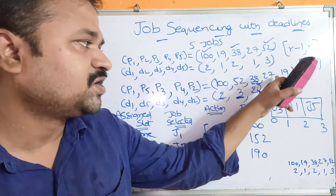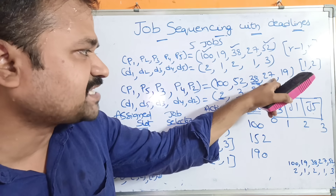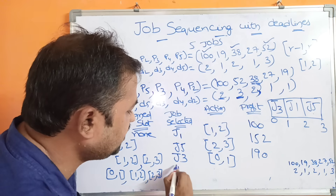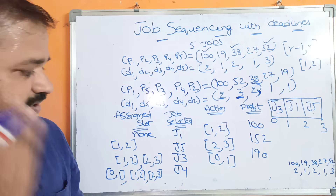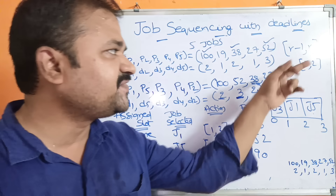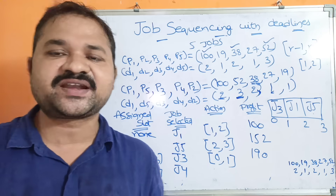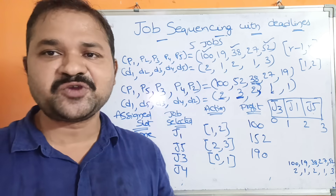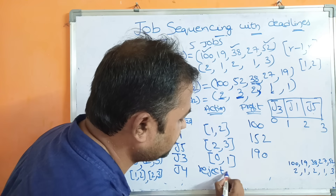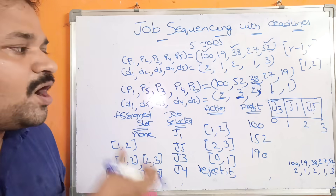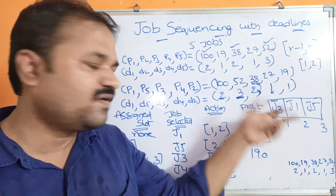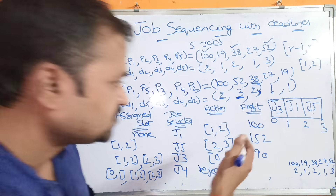Next, we select J4 with profit 27. J4's deadline is 1, so we can only assign slot 0,1. But slot 0,1 is already occupied. Since there is no earlier slot available, we reject J4.